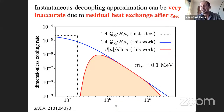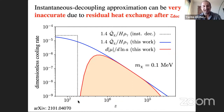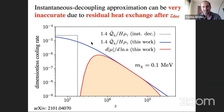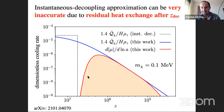However, the instantaneous decoupling approximation turns out to be very inaccurate. In that approximation, dark matter is perfectly coupled and then suddenly completely decoupled with no further heat exchange. But for light enough dark matter with small enough cross-section, even after the dark matter has officially decoupled there is residual heat exchange, which can give rise to a significant spectral distortion.